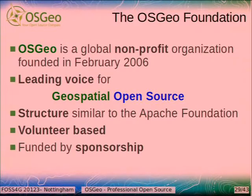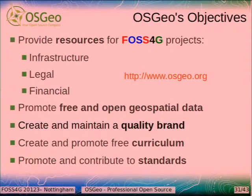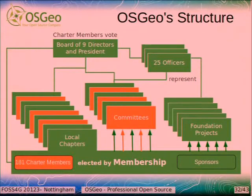We have some similarities with Apache. We are volunteer-based and sponsorship-funded, and our mission is to support and promote the highest quality open source geospatial software. We provide legal infrastructure, financial infrastructure, and promote free and open source software. We help have one of these conferences every year somewhere in the world. OSGEO has a very complex structure: there are 181 charter members who own the organization, and there is a big membership organized in local chapters. Currently we have over 40 local chapters in Germany, Italy, Africa, Netherlands, and the UK — and the UK local chapter is very active.